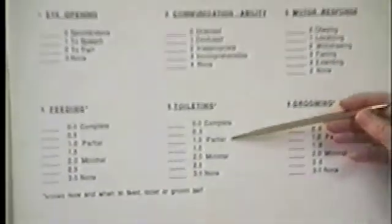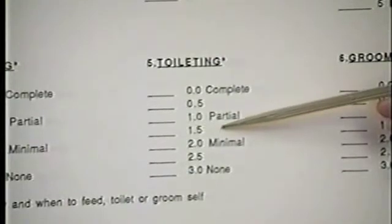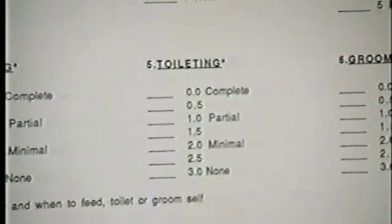Now let's discuss cognitive ability for feeding, toileting, and grooming — this is knowing how and when to feed, toilet, or groom oneself. It is not performance or physical ability; it is cognitive ability. Feeding, toileting, and grooming are in a hierarchy of difficulty: feeding is easiest, toileting next, and grooming is most difficult. We now introduce the 0.5 rating system: for example, if a person falls between a one (partial) and a two (minimal), they could be rated 1.5. This applies to the next five items of the DRS, not the Glasgow Coma Scale items.